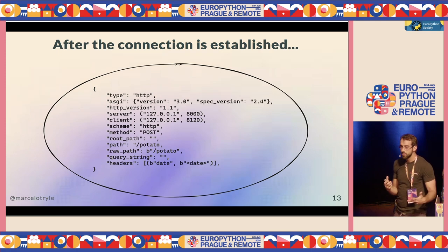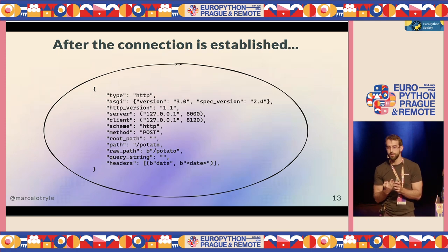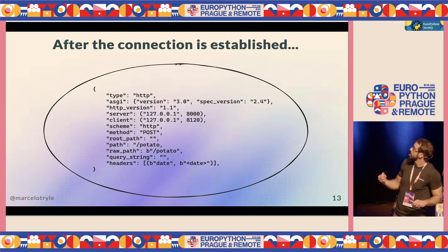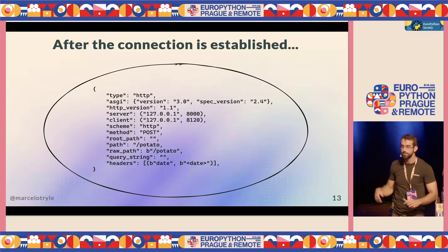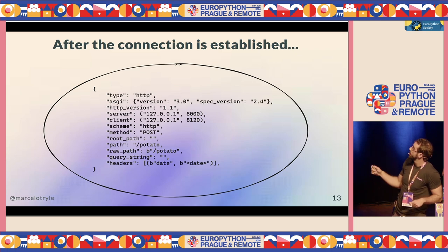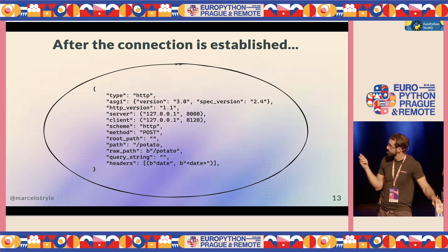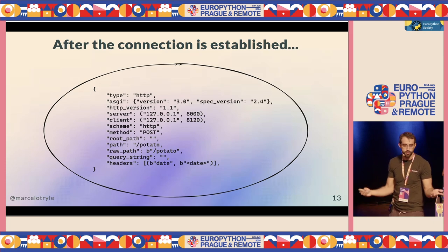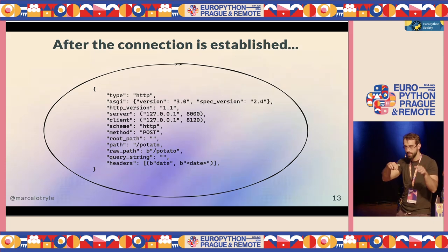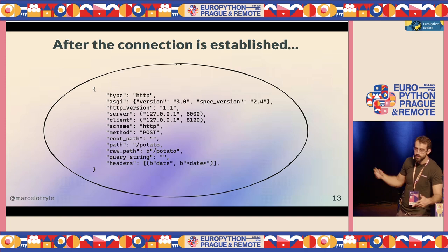There are three parameters for an ASGI application: scope, receive, and send callables. The scope is just a bunch of information about the request and the connection — you can see the server and client IP, the HTTP version, the path, the query parameters, everything that makes sense to pass to the application. We use some of that information to make things convenient for FastAPI users — for example, the headers.